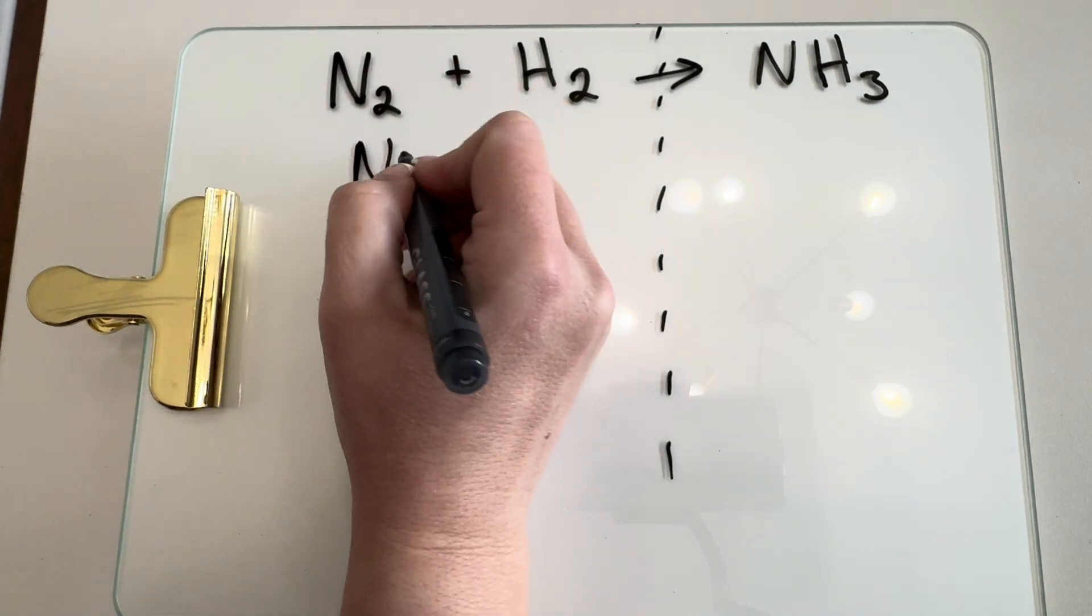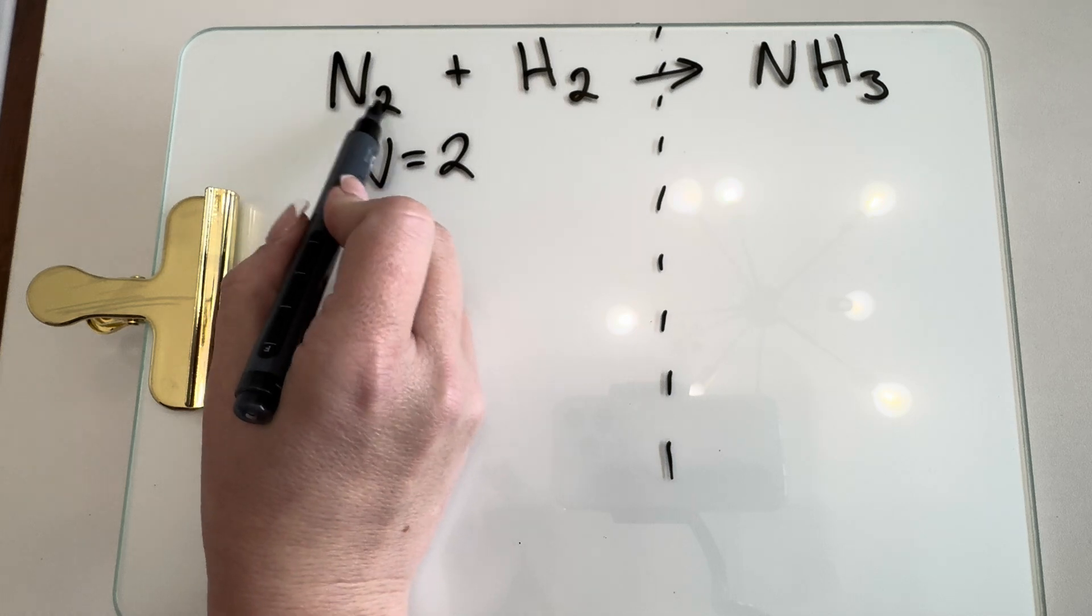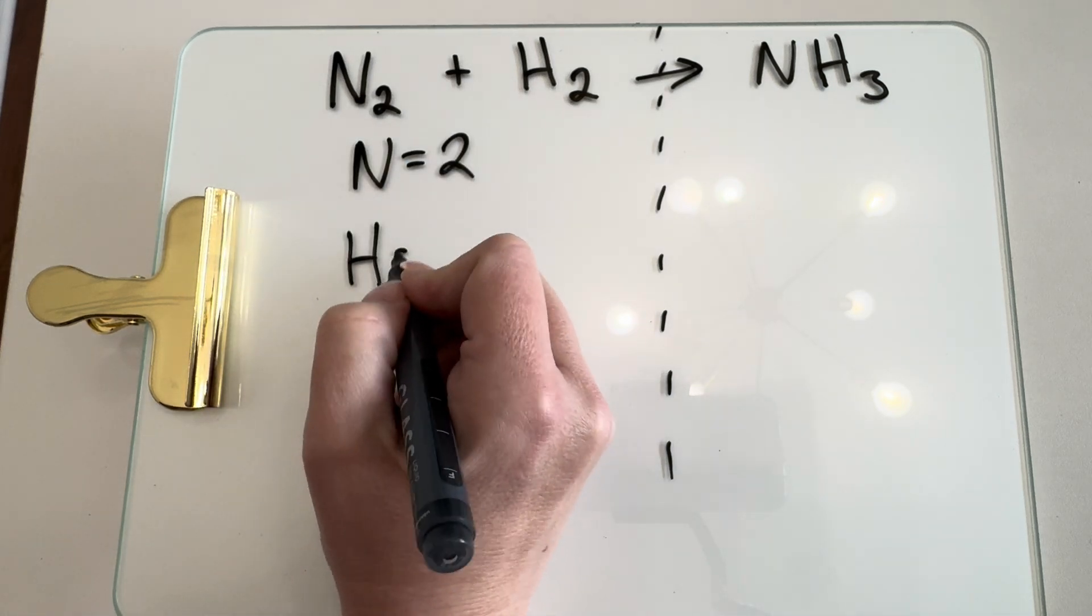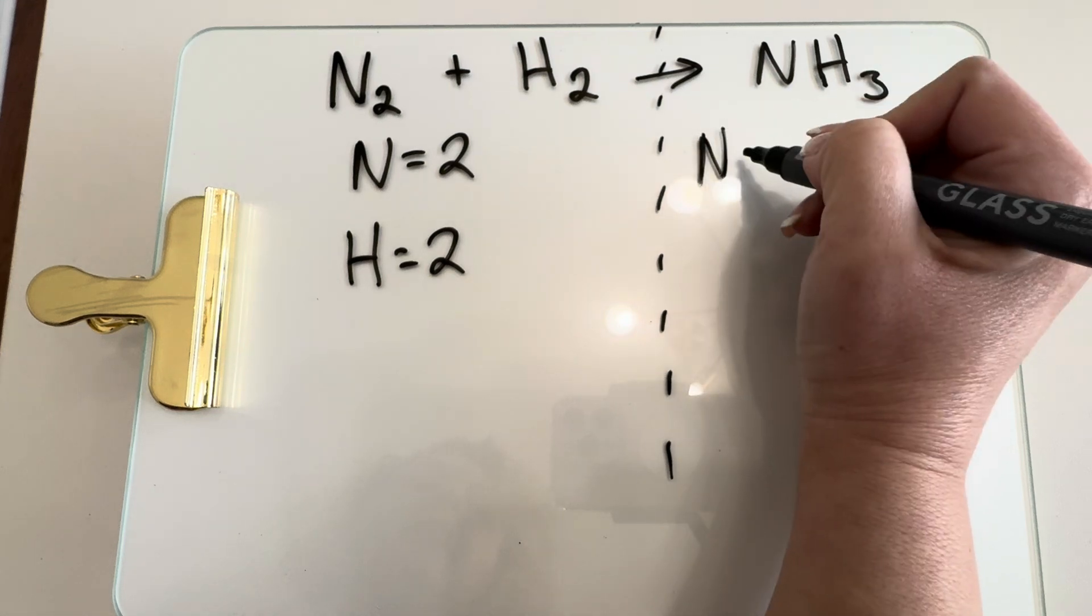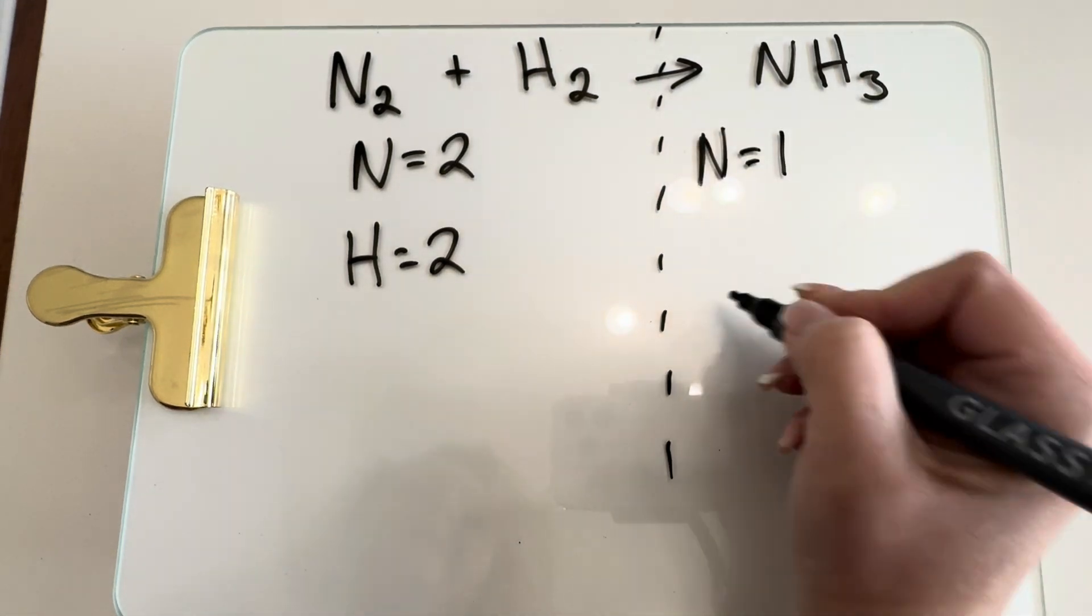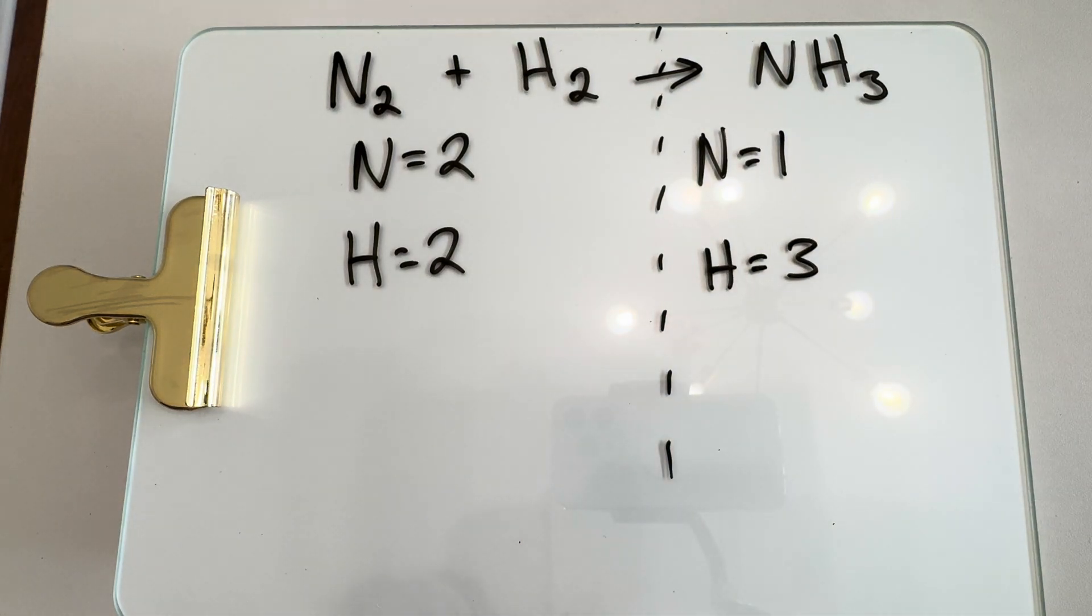Now we're going to determine how many atoms we have of each element on both sides. So we have two nitrogen and two hydrogen on our reactants, and on our products we have one nitrogen and three hydrogen. We can see this is not a balanced reaction, so we need to balance it.